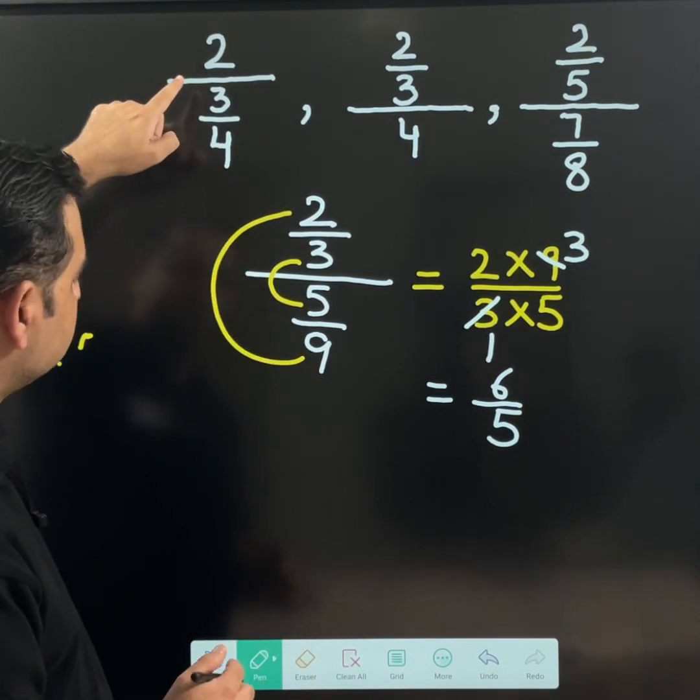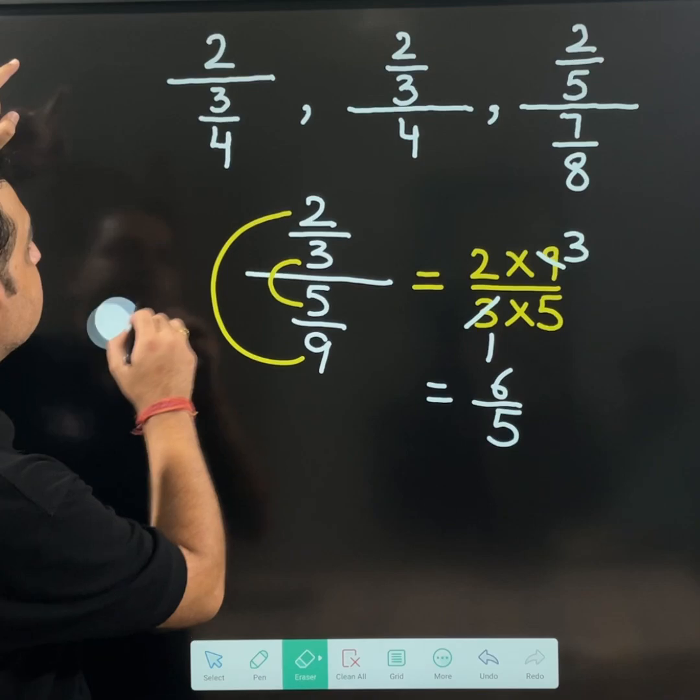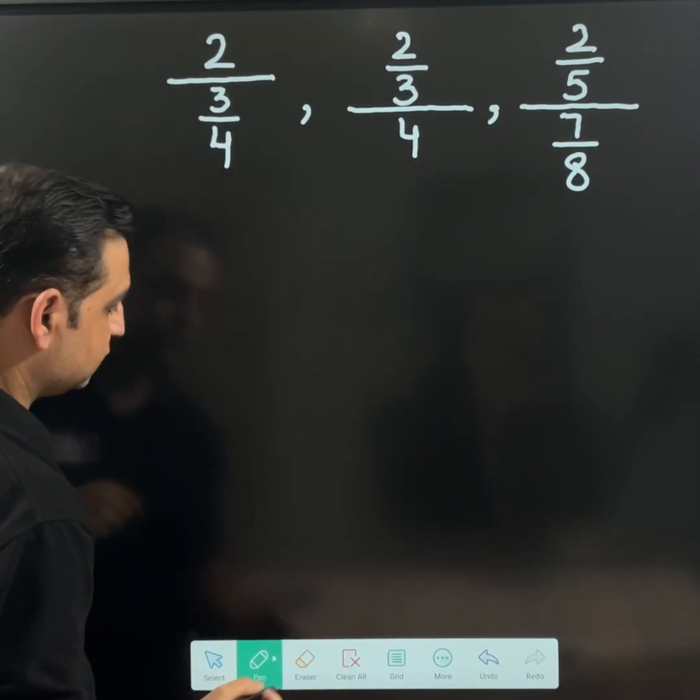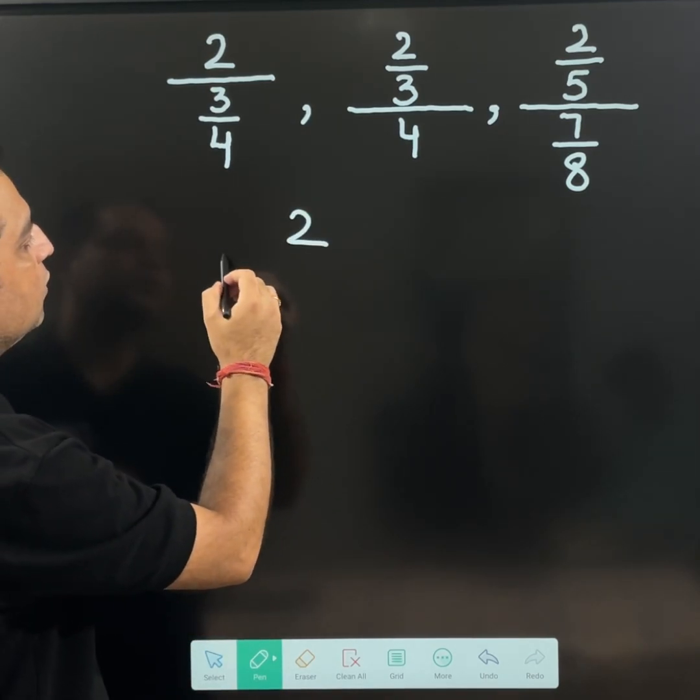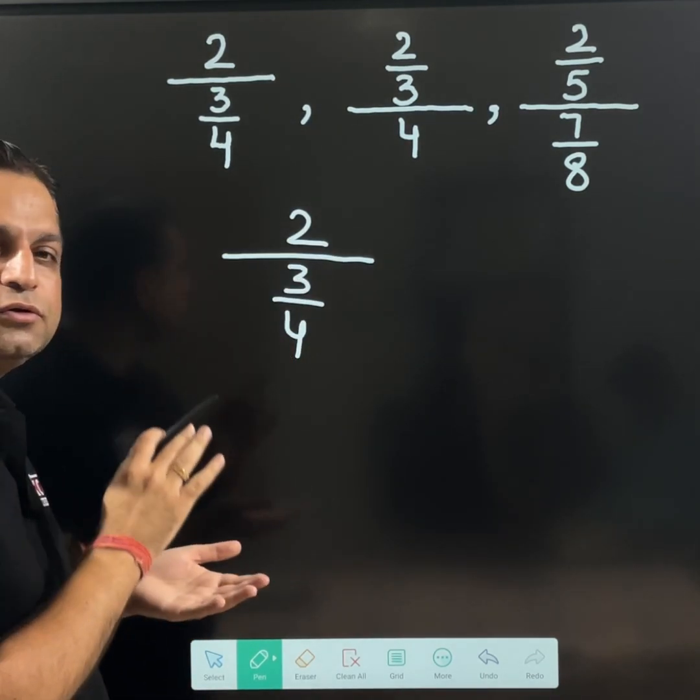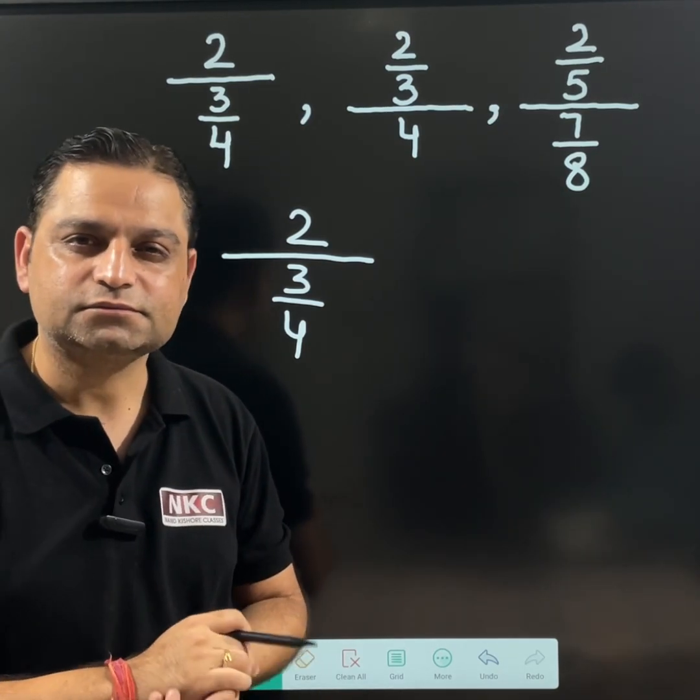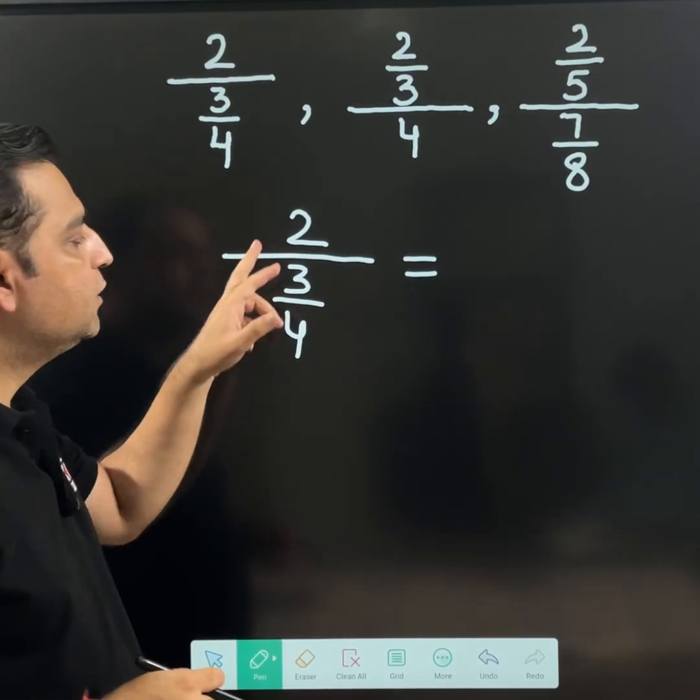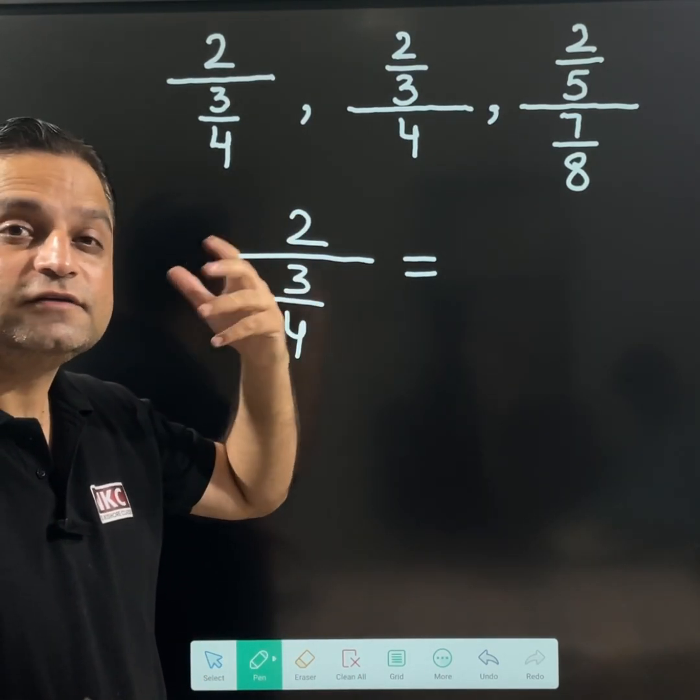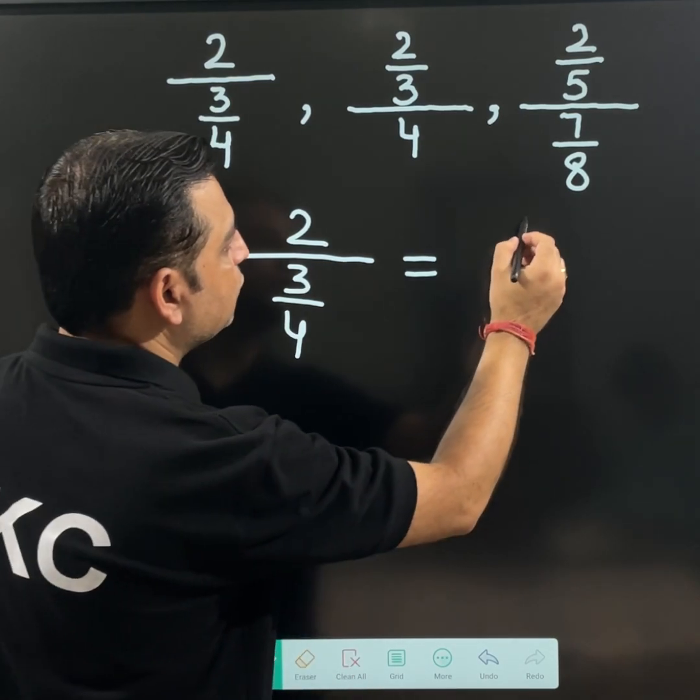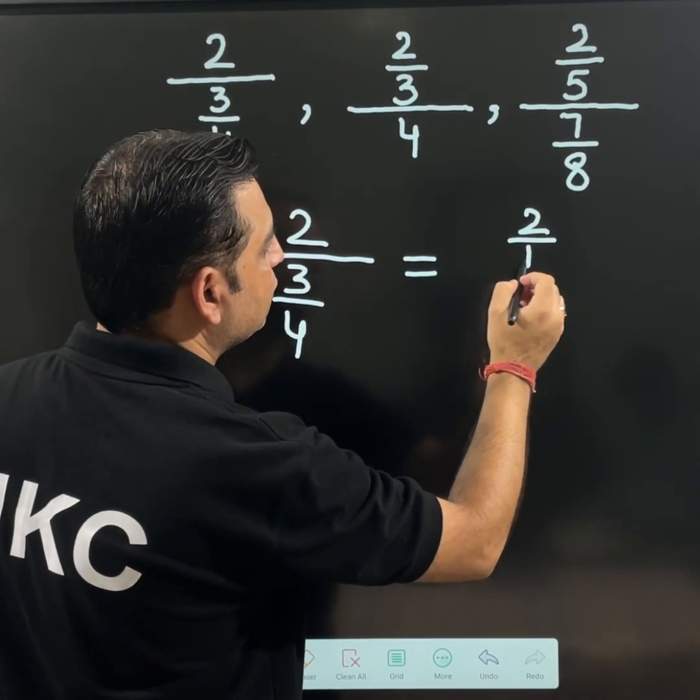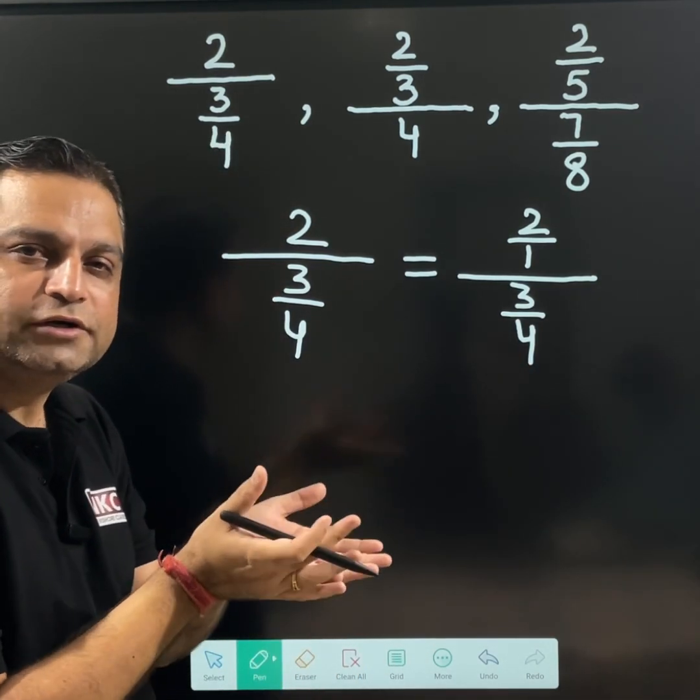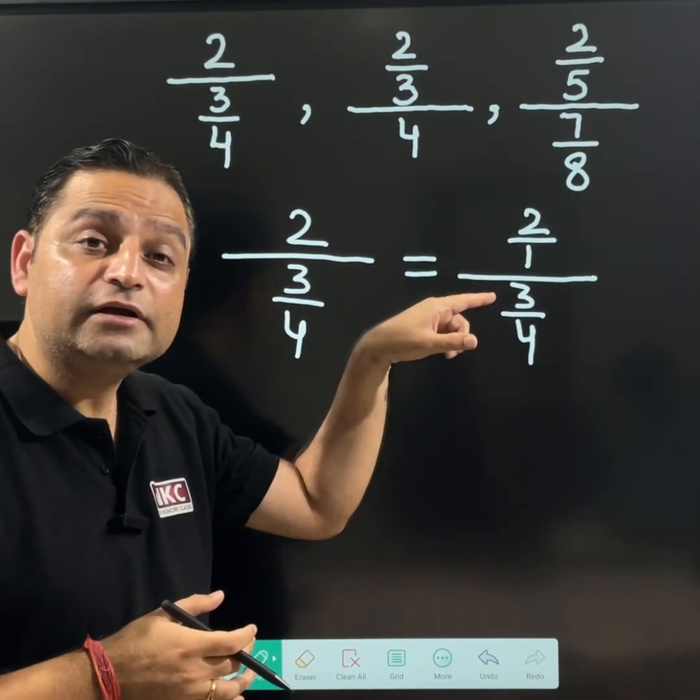But now let me come to this case first of all which is visible here. 2 over 3 upon 4 you can see. What is that? 2 upon 3 over 4. And I want to use the same shortcut. What you should do here. I can see numerator is only 2 which is an integer, right. This 2 you can write as 2 upon 1. Because 2 over 1 means only 2. This is I am clearing the basic concept.